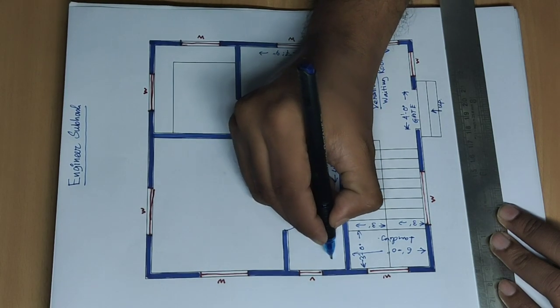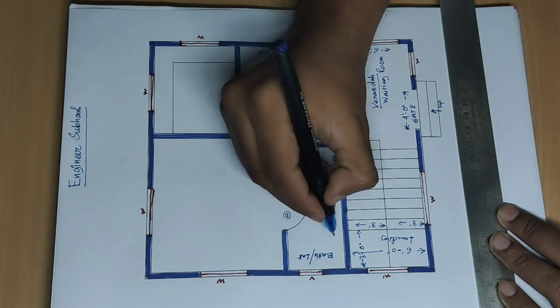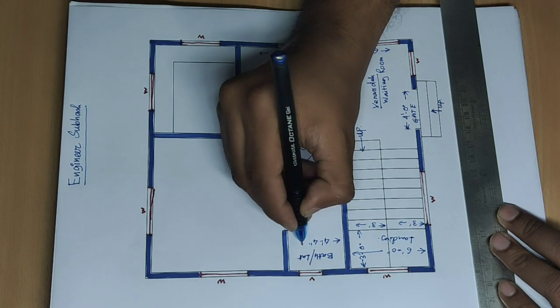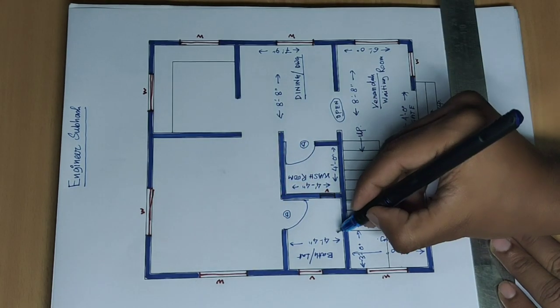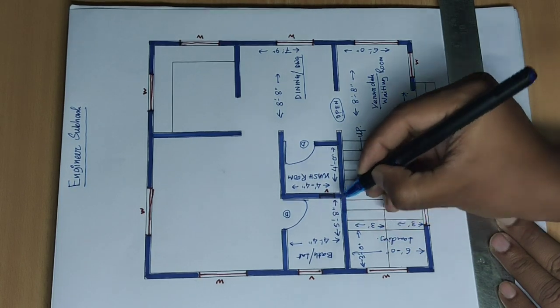Attached bath and latrine. Size 4 feet 4 inch and other side 5 feet 8 inch.